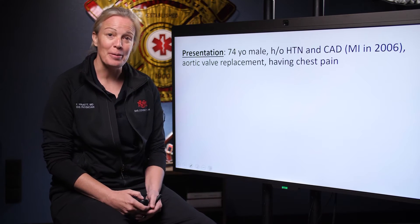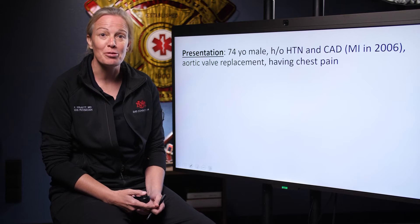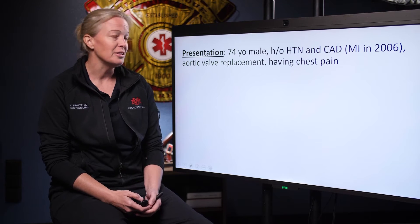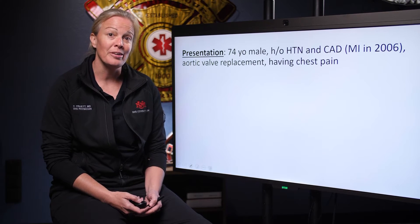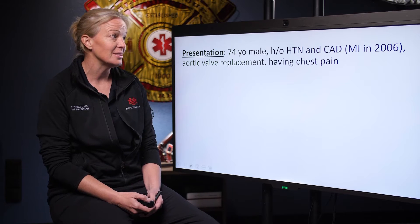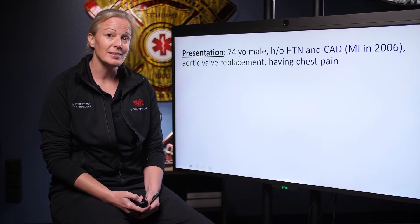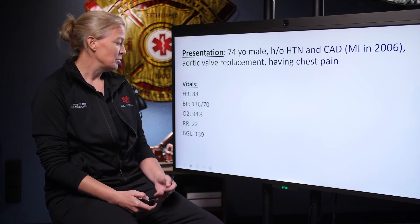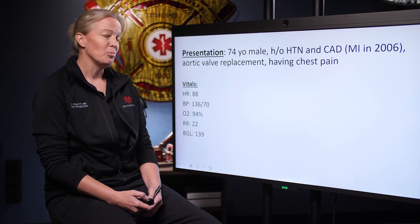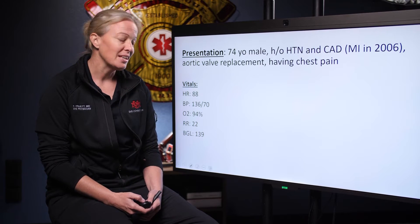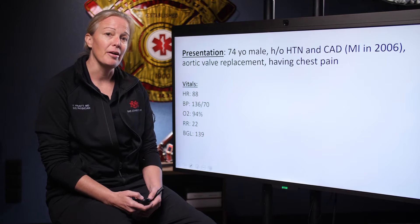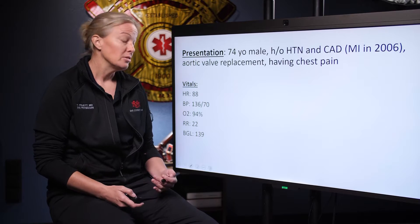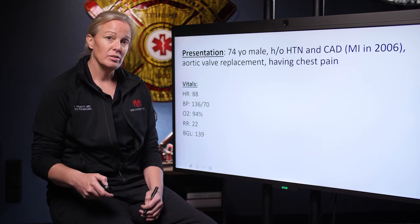This week we have a 74-year-old male who has a history of pretty chronic chest pain, also a history of high blood pressure and known coronary artery disease who had a stent placed in 2006, and incidentally he's also got a prosthetic aortic valve. His vital signs: heart rate of 88, blood pressure of 136 over 70, normal oxygen saturation on room air, normal respiratory rate, and a blood sugar of 139. So nothing really sticking out on his vital signs — generally appears okay.